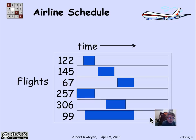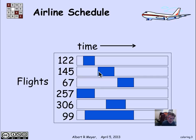Let's look at a sample schedule. There are six flights here numbered 122, 145 through 99. The horizontal bar represents times during the day. This blue block indicates that flight 122 is on the ground from 3 a.m. to 7 a.m. Flight 145 is on the ground at a completely disjoint time interval. Flight 257 is on the ground from midnight until about 6 a.m., and it does overlap with 122.